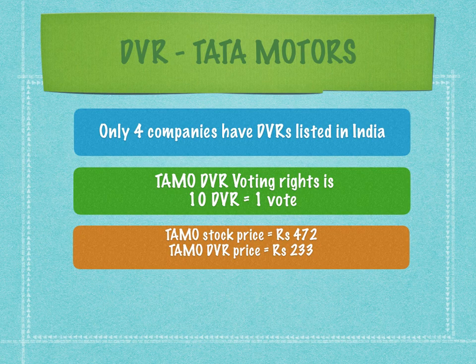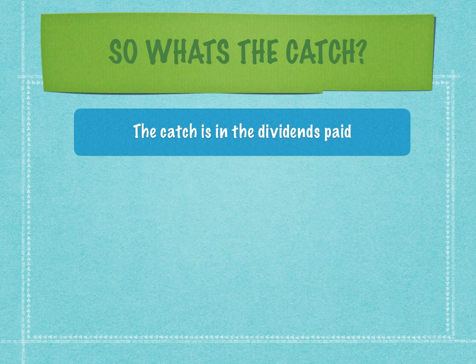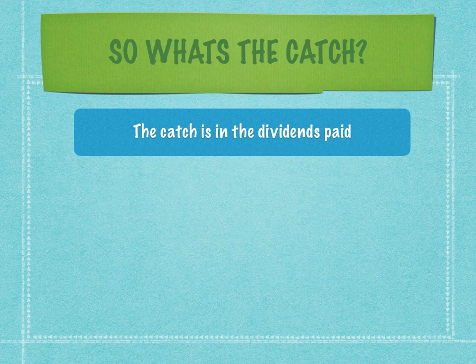To make the DVR interesting for investors, companies offer a catch — it's in the dividends that are paid. Shareholders and DVR holders get different dividends. DVR holders are paid more dividends so that people invest in the DVR. There's some kind of compensation given to the DVR holders for their reduced voting powers, and therefore the catch is in the dividends paid.